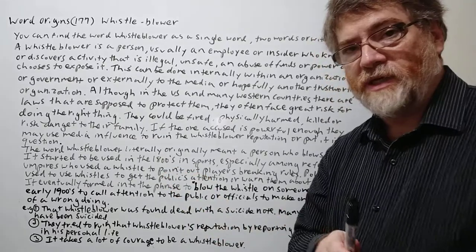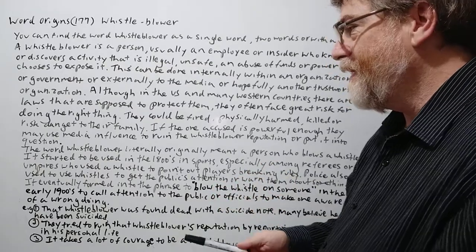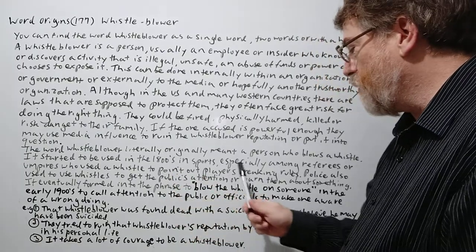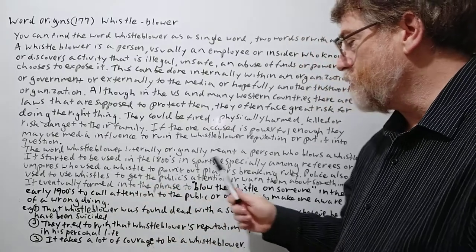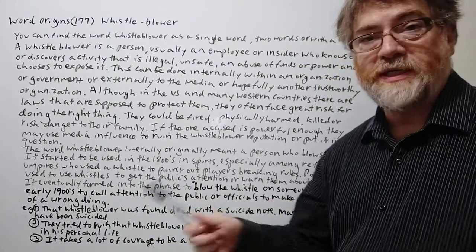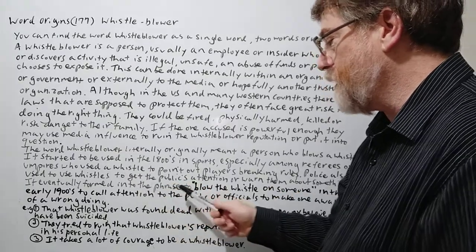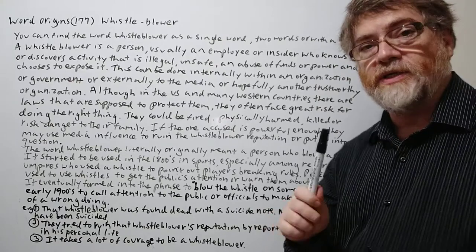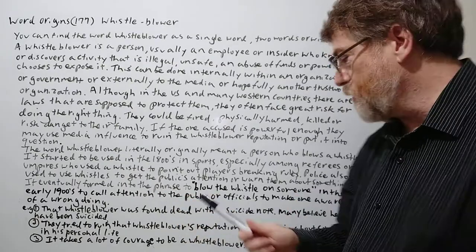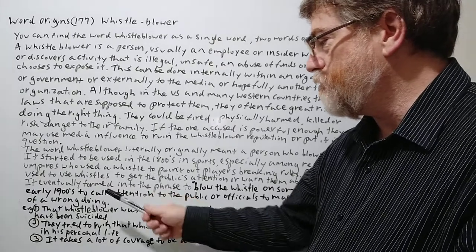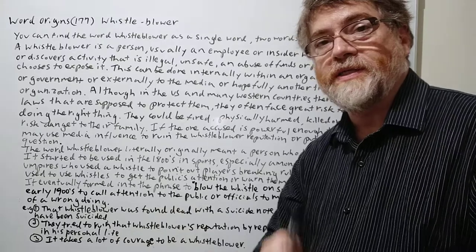The word whistleblower literally and originally meant a person who blows a whistle. It started to be used in the 1800s in sports, especially among referees and umpires, who used a whistle to point out players breaking rules. Police also used to use whistles to get the public's attention or warn them about something. It eventually formed into the phrase 'to blow the whistle on someone' in the early 1900s, meaning to call attention to the public or officials and make one aware of a wrongdoing.